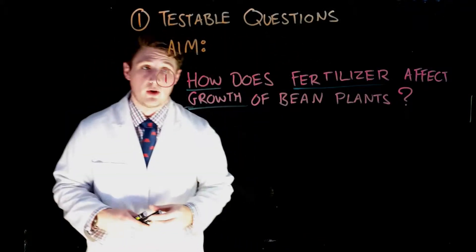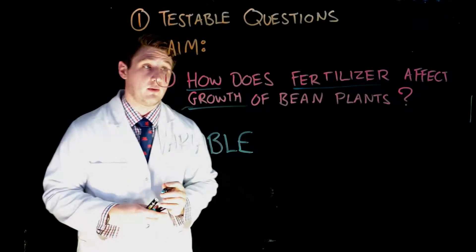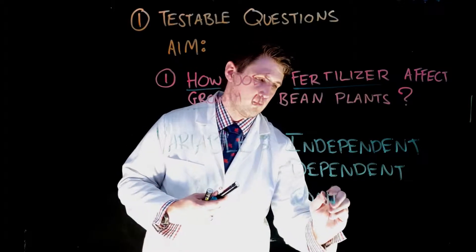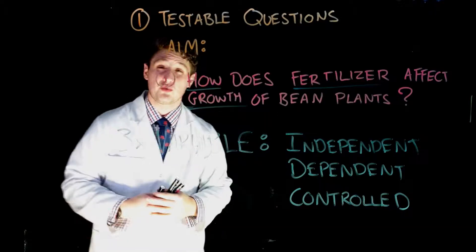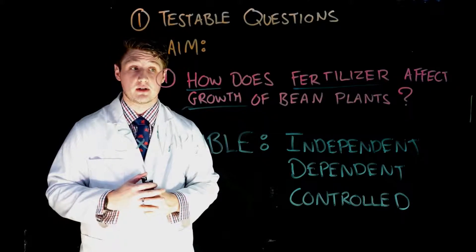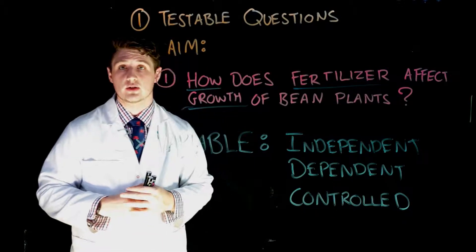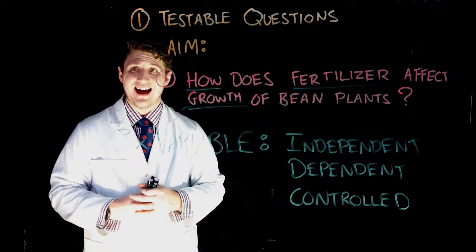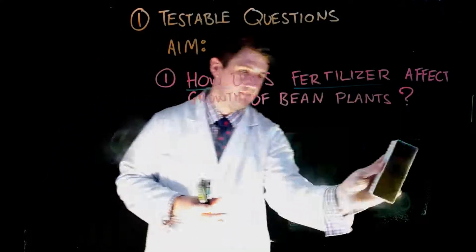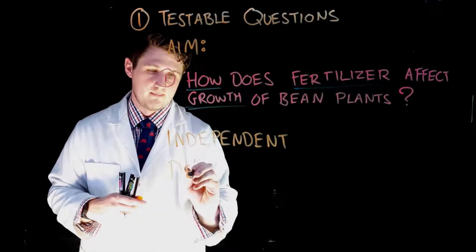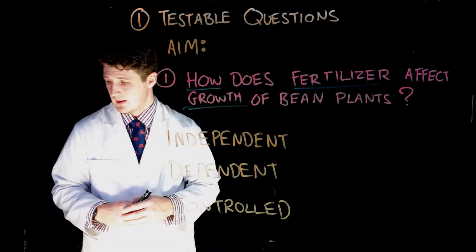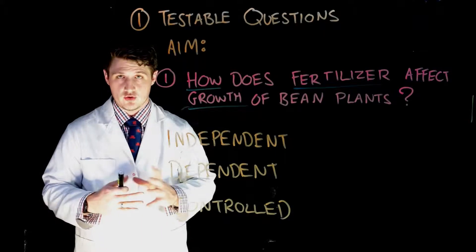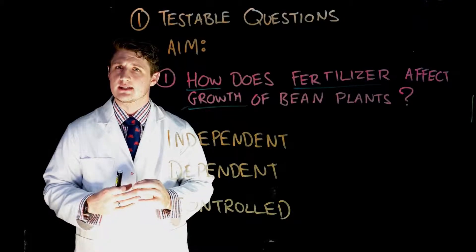Now, about that word 'variable' — we have a couple of types. We need to remember the three types of variables when approaching and designing an experiment: the independent, the dependent, and the control variables. We can't really write a testable question unless we understand what these are. As scientists, we need to ensure our experiment is accurate — only changing one thing at a time, controlling everything else, and measuring something specific to record our results.